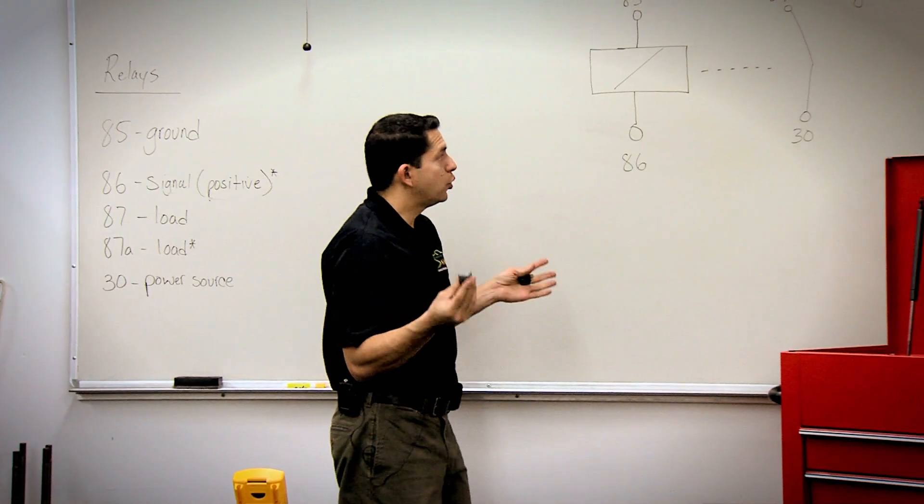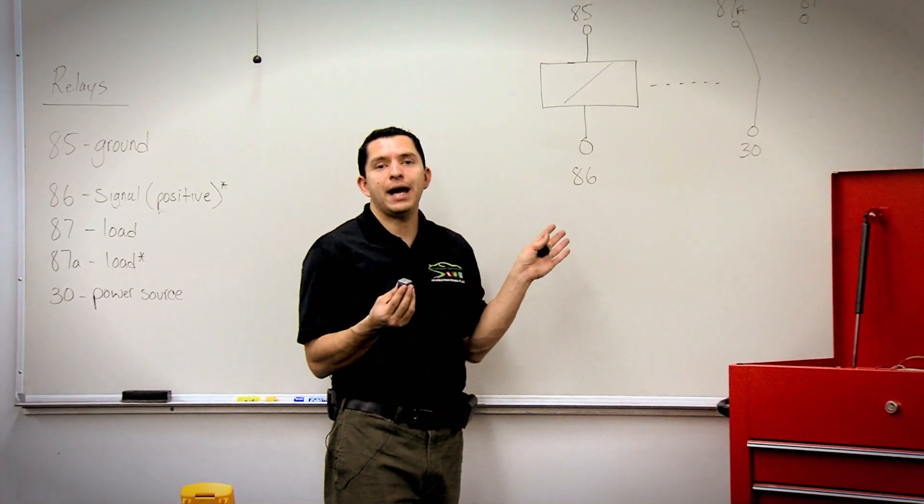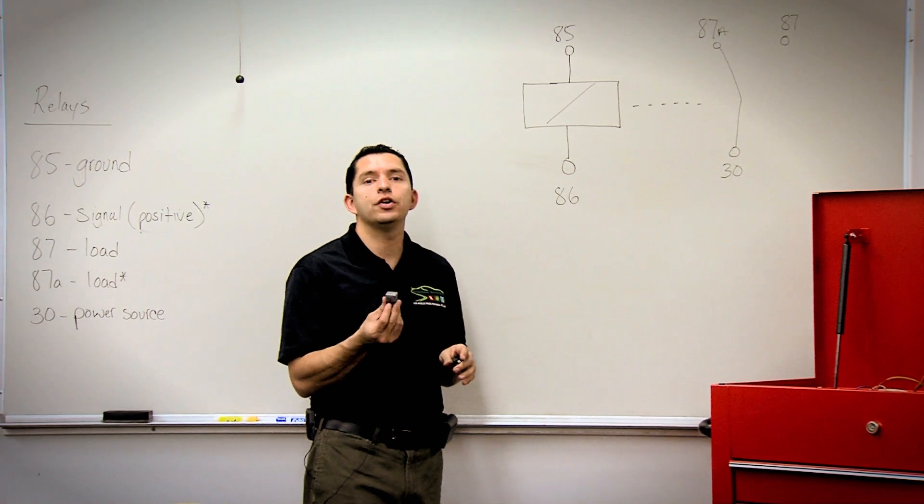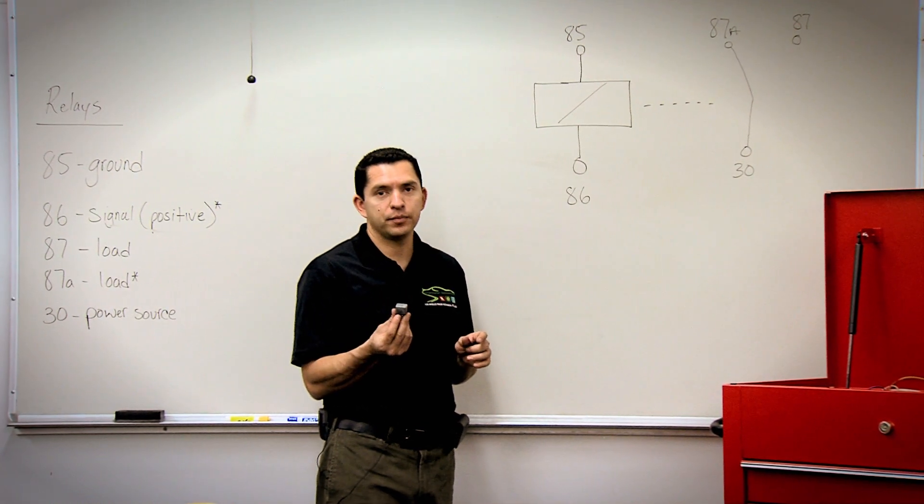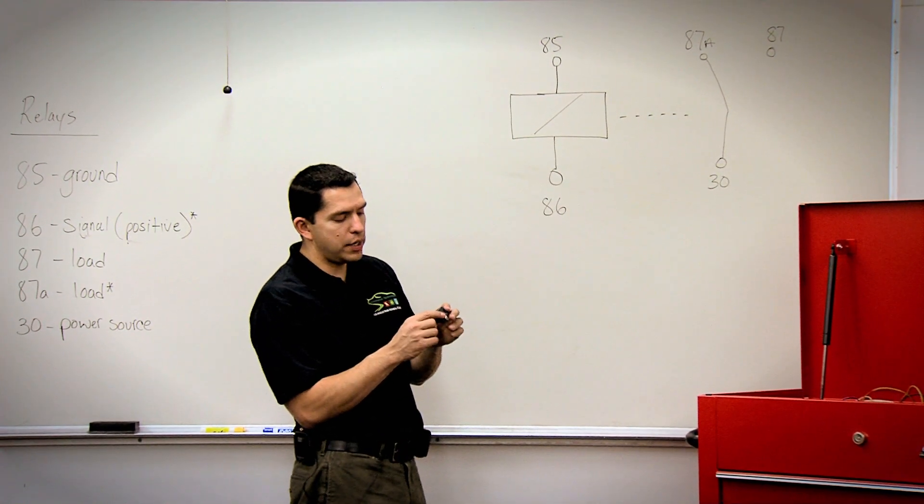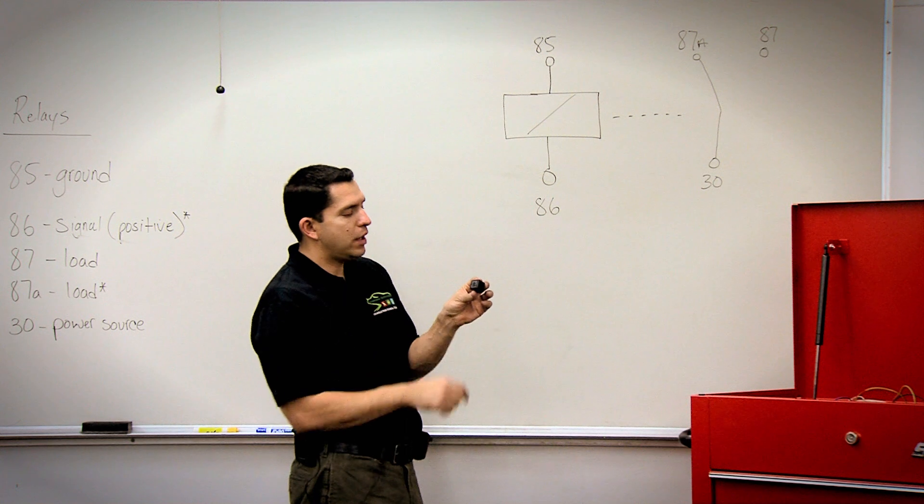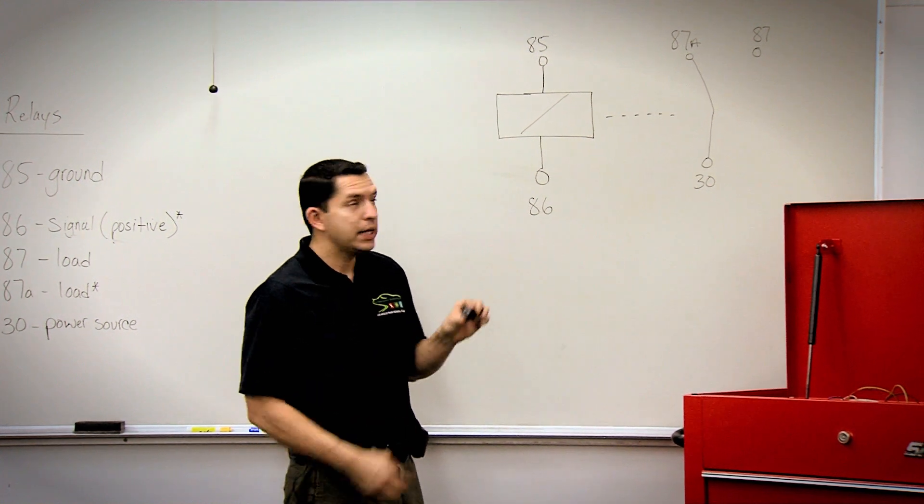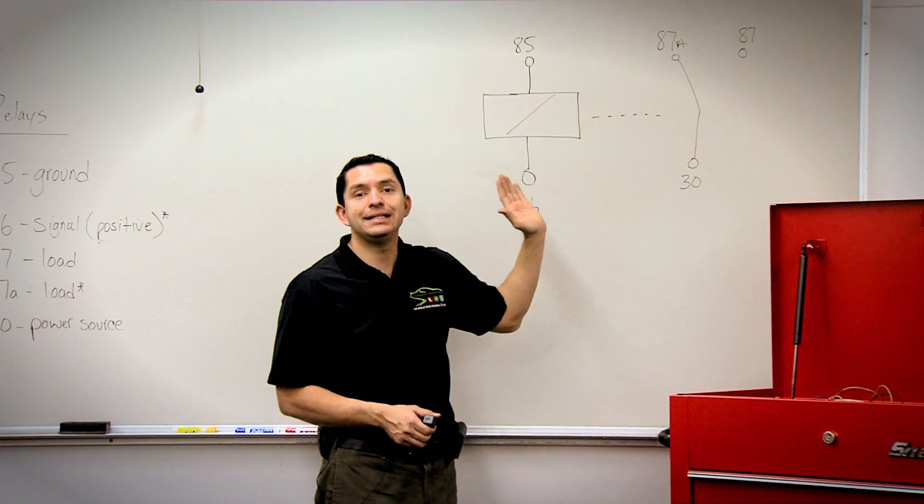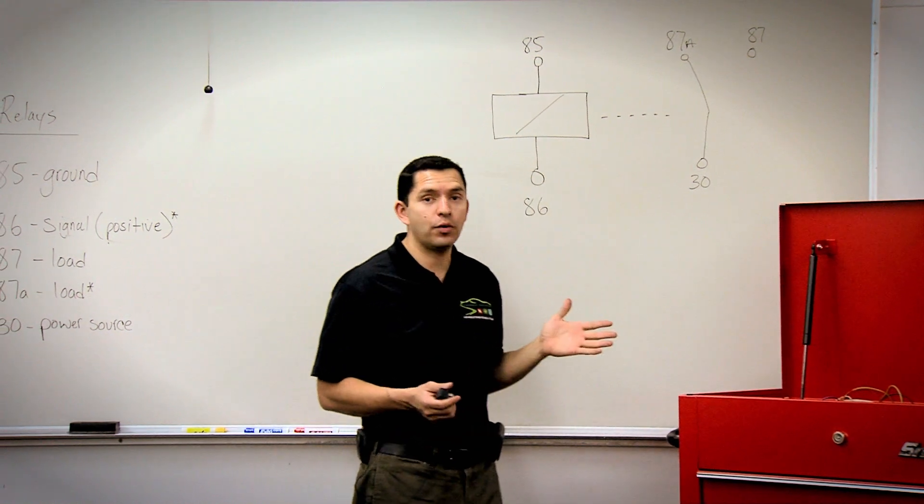As a rule, all schematics always show components in their de-energized position. What I drew on the board is the schematic of a typical Bosch relay, showing how our contacts lie when the relay is de-energized, when we have no power in there.